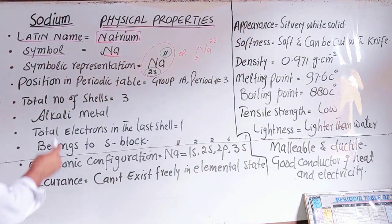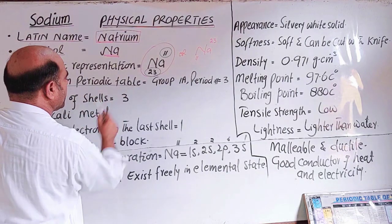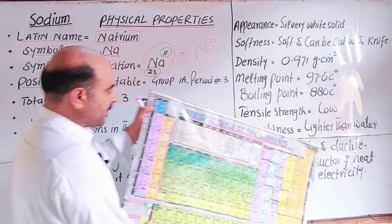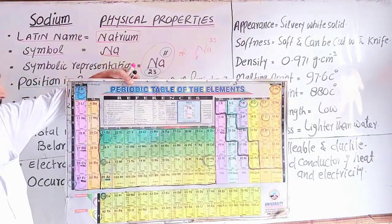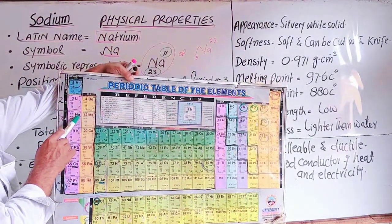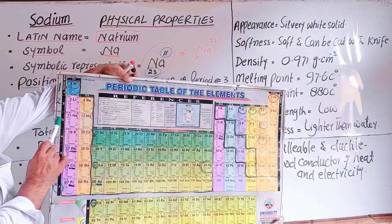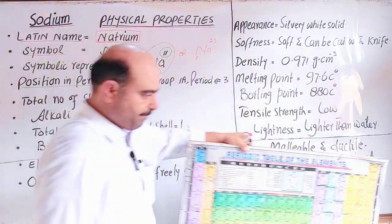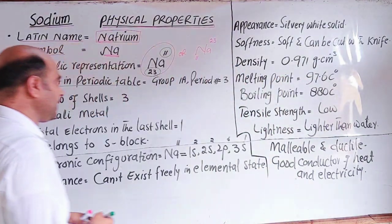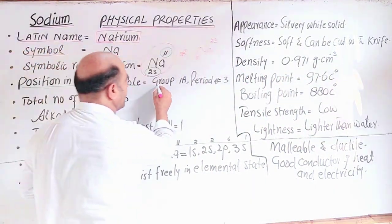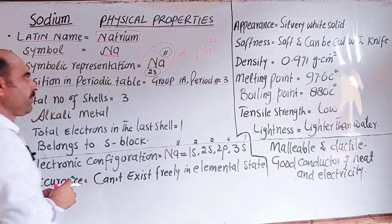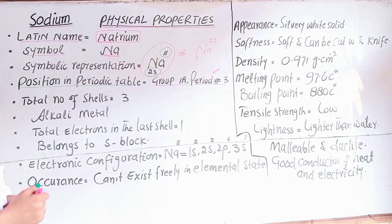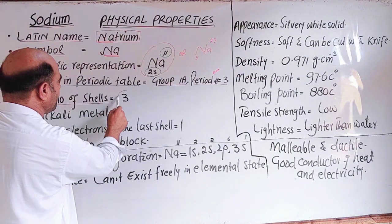Position in periodic table: it is a member of group 1A in the periodic table and period 3. The position in periodic table shows the sodium element is in group 1A and period 3. The period number represents the total number of shells, so there are three shells.